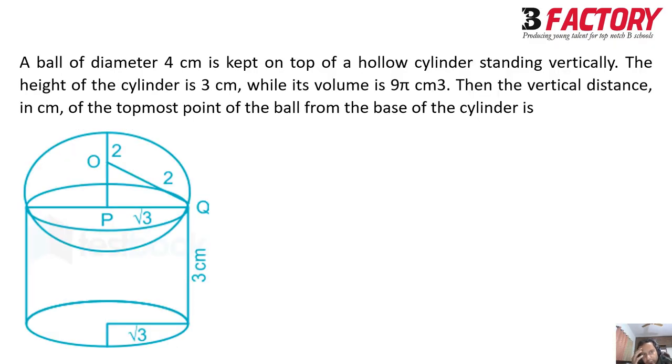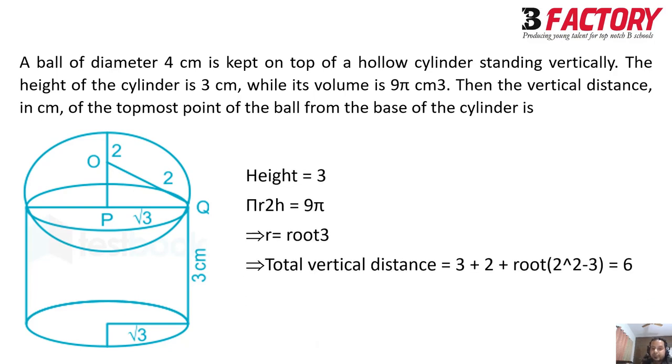Okay. Next one, a ball of diameter 4 is kept on a hollow cylinder standing vertically and height of the cylinder is 3, volume is 9 pi. What is the topmost point of the ball to the base of the cylinder? If you get the diagram, you will be able to solve this question more often than not. See, root 3. So how do you get root 3? You, pi r square h, you equate it, the volume with 9 pi. You will get the radius as root 3. The radius is root 3 and just visualize this diagram. If you visualize this diagram vertically, you will be able to solve the question. Okay. If you are not able to visualize this diagram, if you have never practiced any three geometric question, then this becomes slightly difficult for you.